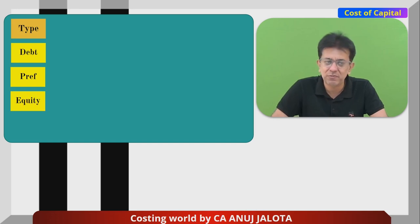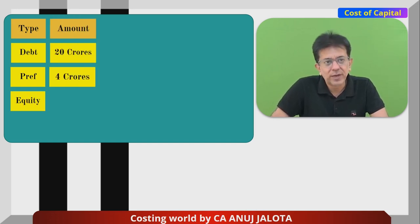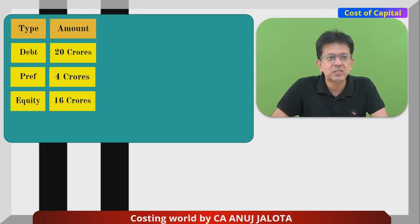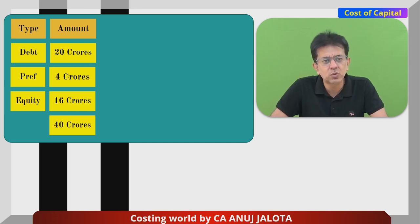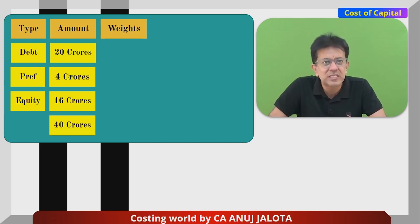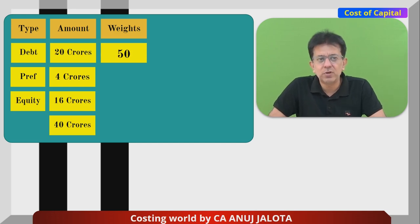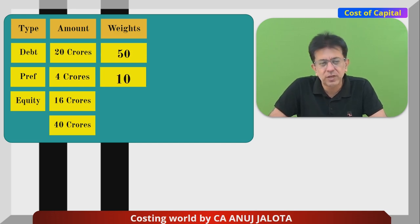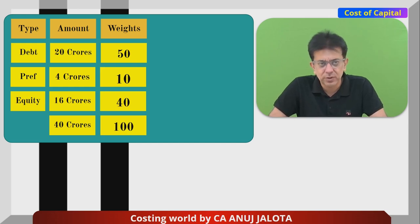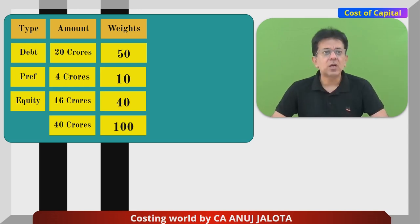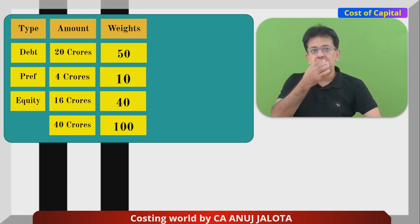In the table you will have debt, preferences, and equity. The amounts are: debt = 20 crores, preferences = 4 crores, equity = 16 crores, giving a total of 40 crores. Now convert these to weights out of 100: debt = 20/40 × 100 = 50, preferences = 10, and equity = 40. The total is 100.